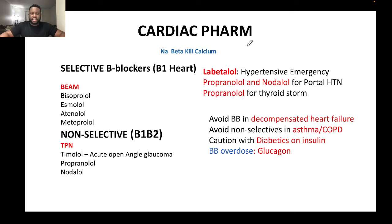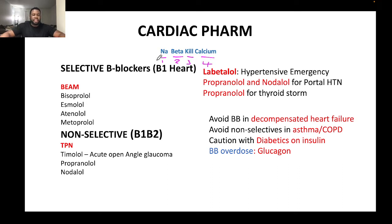These drugs are generally antiarrhythmic but are also used for different purposes. The mnemonic for remembering the different classes is 'Sodium and Beta Killed Calcium': Class 1 antiarrhythmics are sodium channel blockers, Class 2 are beta blockers, Class 3 are potassium channel blockers, and Class 4 are calcium channel blockers.